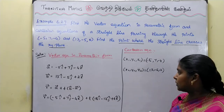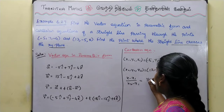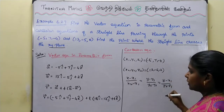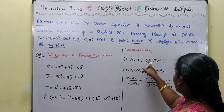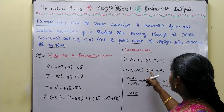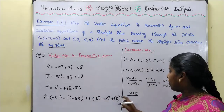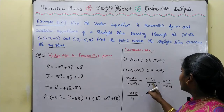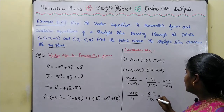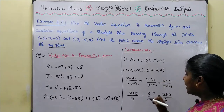So we can write the Cartesian equation: x minus x1 by x2 minus x1 is equal to y minus y1 by y2 minus y1 is equal to z minus z1 by z2 minus z1. Substituting values: x plus 5 by 18 is equal to y minus 7 by minus 12 is equal to z plus 4 by 6. This is the Cartesian equation.